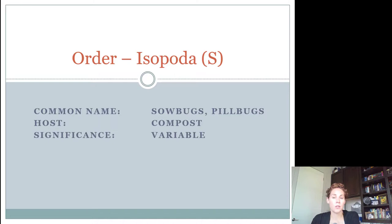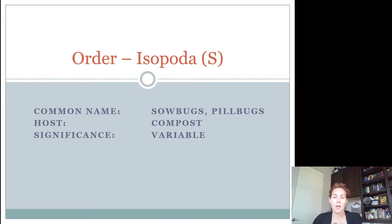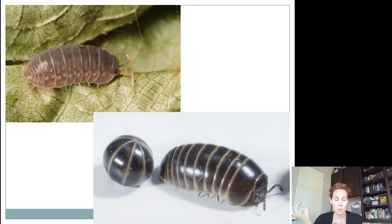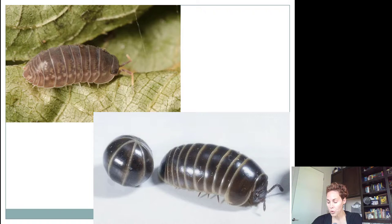Seniors also need to know order Isopoda — the sow bugs, pill bugs, and roly polies. These are found in compost, decaying organic matter, mulch, and dying plants. They're considered variable: sometimes they're pests if they chew on new seedlings, but usually they're just in the landscape without causing major issues. Sow bugs are more flattened and cannot roll up, and they appear more gray. Pill bugs are more rounded on their back, like an armadillo, and can roll into a ball. All are in order Isopoda, class Crustacea — the only crustaceans in the 4-H contest.